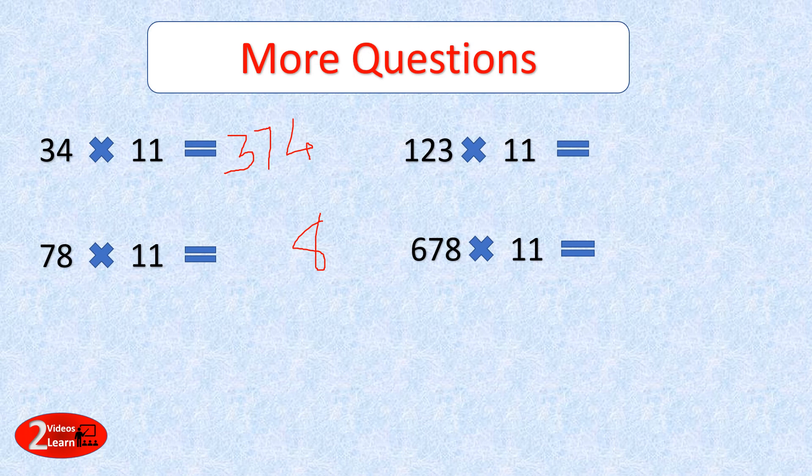Now let's see 78 by 11. I write 8 as is, then 8 plus 7 is 15 — so I write 5 and carry forward 1. Then 7 plus 1 carry forward gives 8. So the answer is 858.